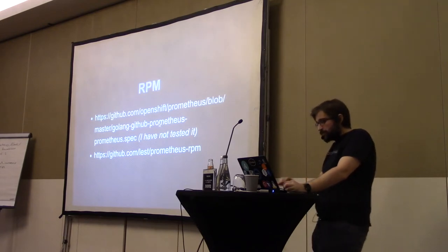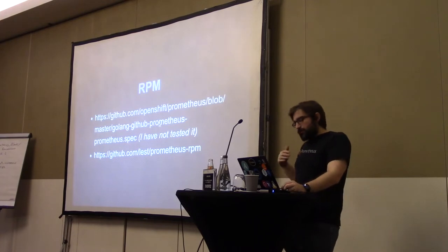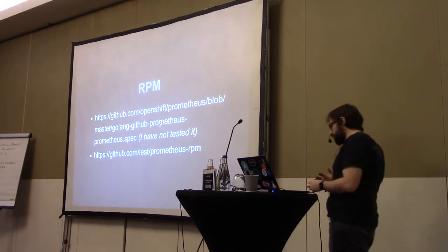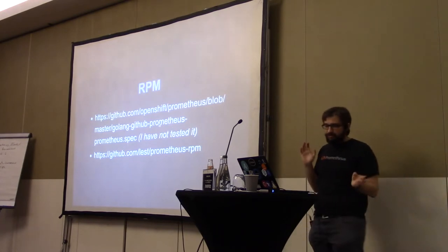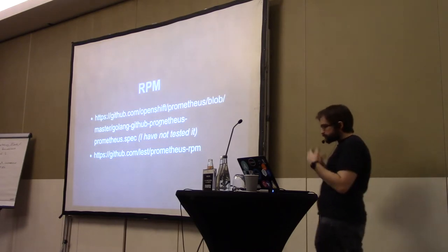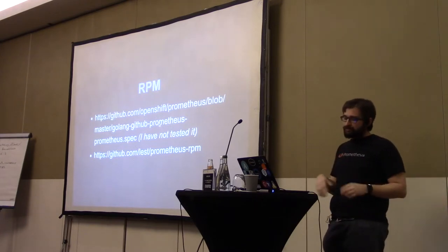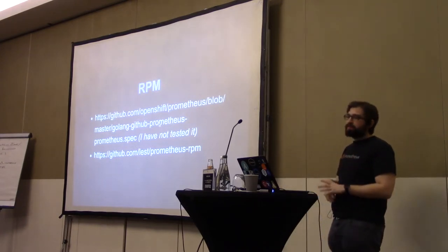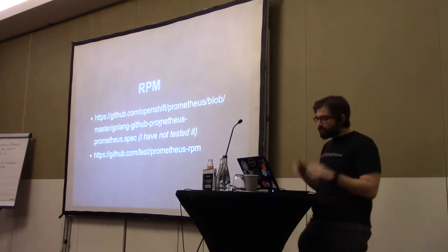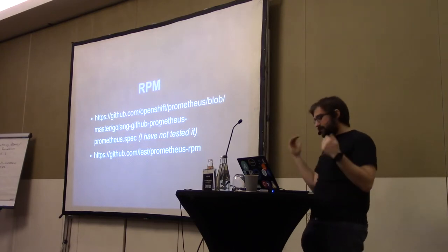For CentOS, you have RPMs. If you want to deploy it with RPM, you can use two different kinds of spec files: the first is the Red Hat spec file for OpenShift that packages Prometheus in a correct way, and the second is the one I'm using, which just takes what's on GitHub with the Prometheus releases and puts it into an RPM. You get advantages like the systemd file and all that extra stuff in the RPM.